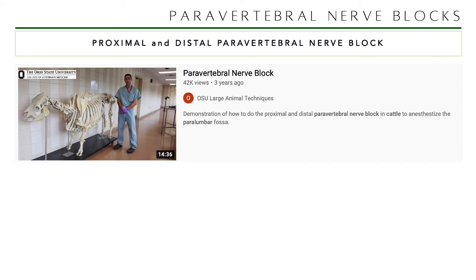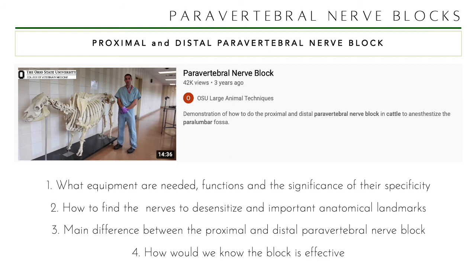Focus on these questions while watching: What equipment is needed, and the functions and significance of size specificity? How do you find the nerves to desensitize and what are the important anatomical landmarks? What is the main difference between proximal and distal paravertebral nerve block? And how do we know the block is effective? I will list all these questions in the classroom. Your grade, your problem.